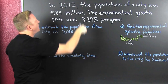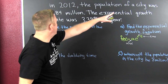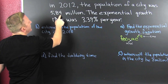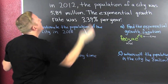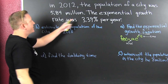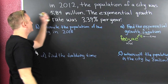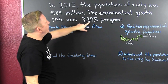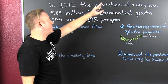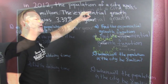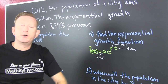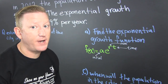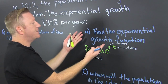In 2012, the population of a city was 5.84 million. The exponential growth rate was 3.39% per year. What do we want over here? We want to find the exponential function.